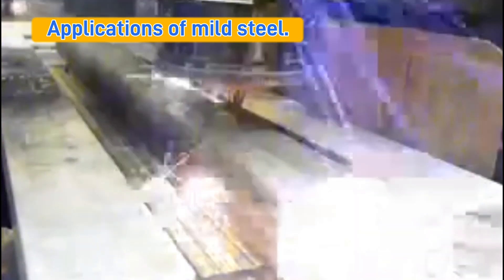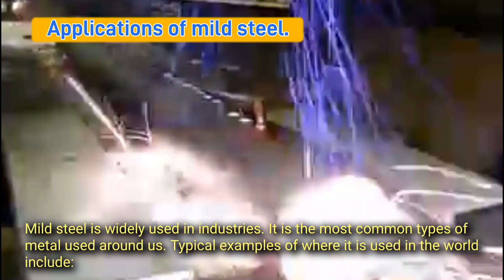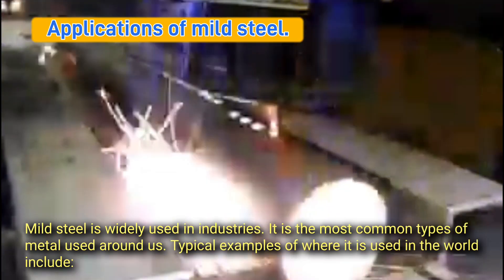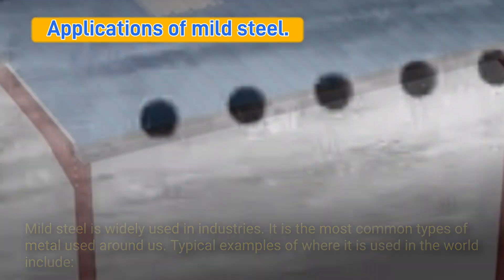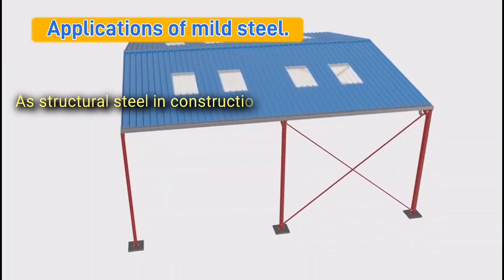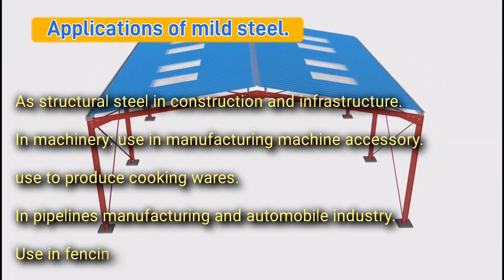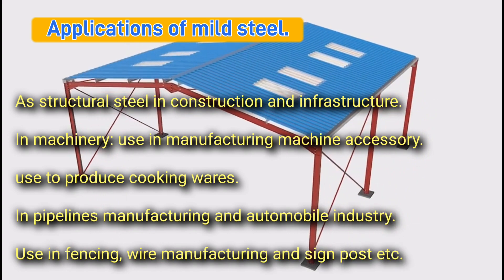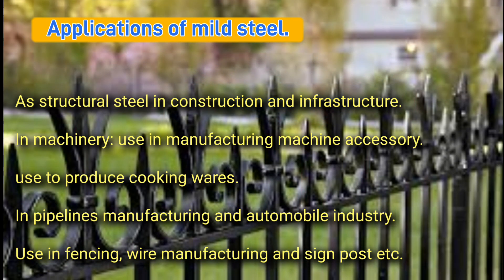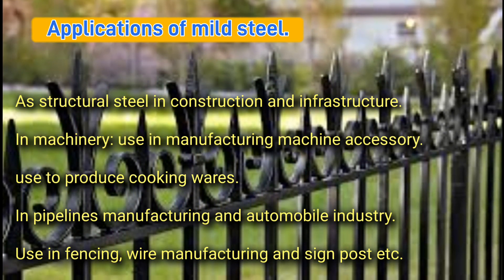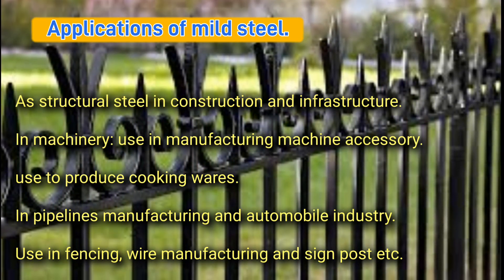Applications of mild steel: Mild steel is widely used in industries — it is the most common type of metal used around us. Typical examples include use as structural steel in construction and infrastructure, in machinery and manufacturing machine accessories, used to produce cooking wares, in pipeline manufacturing and the automobile industry, use in fencing, wire manufacturing, signposts, and more.